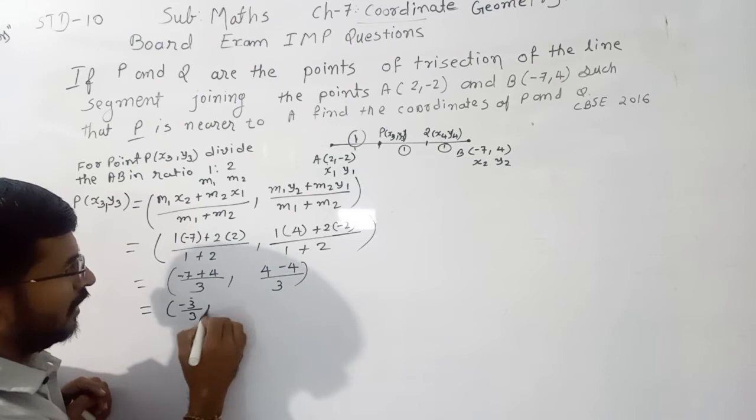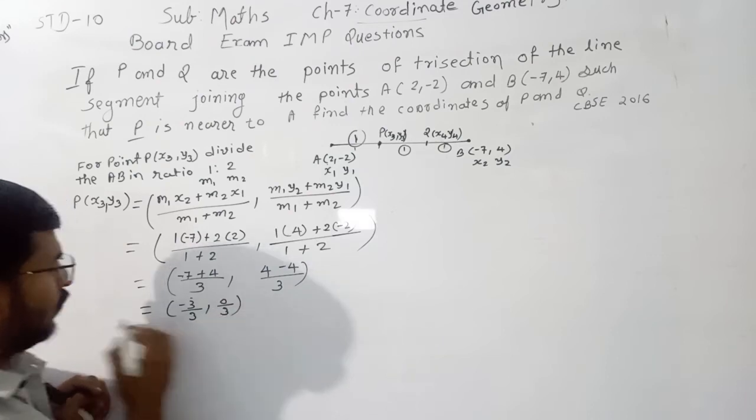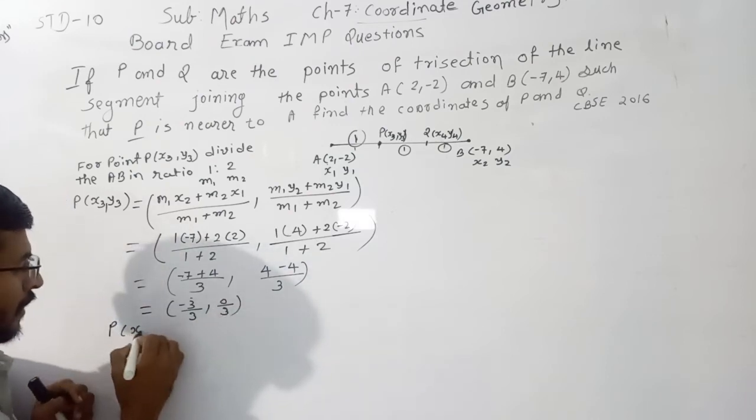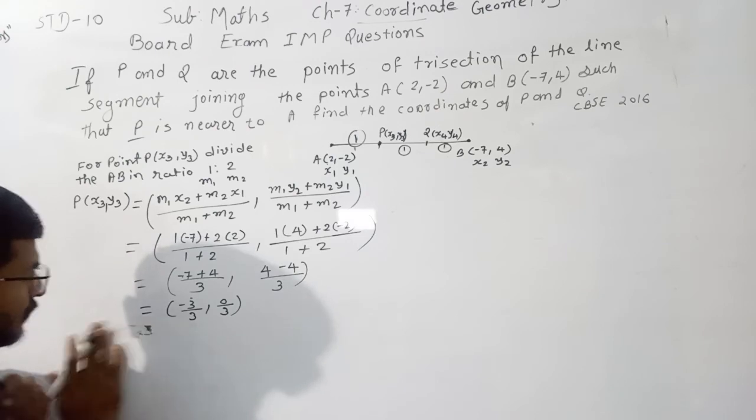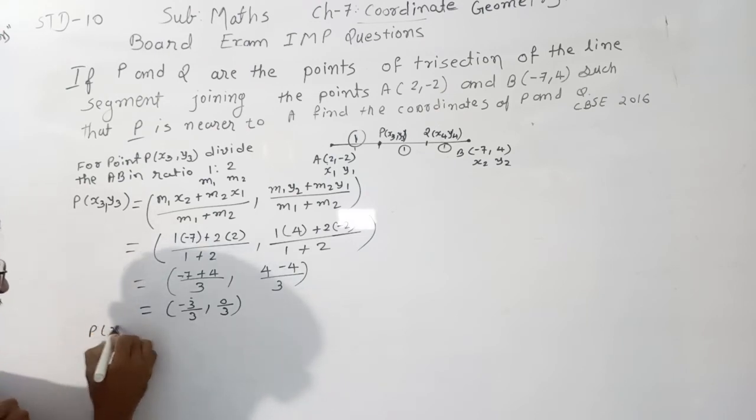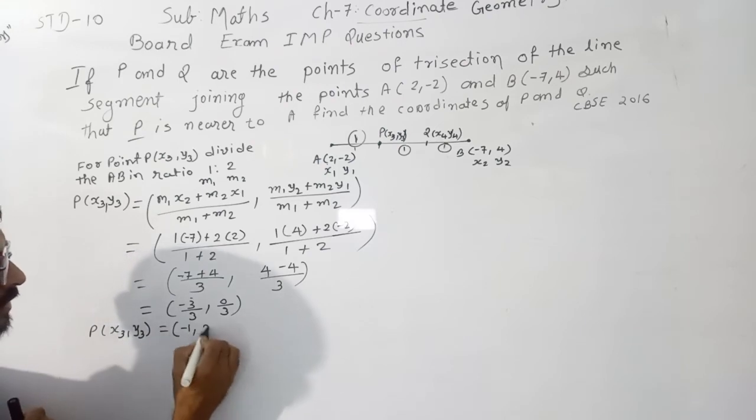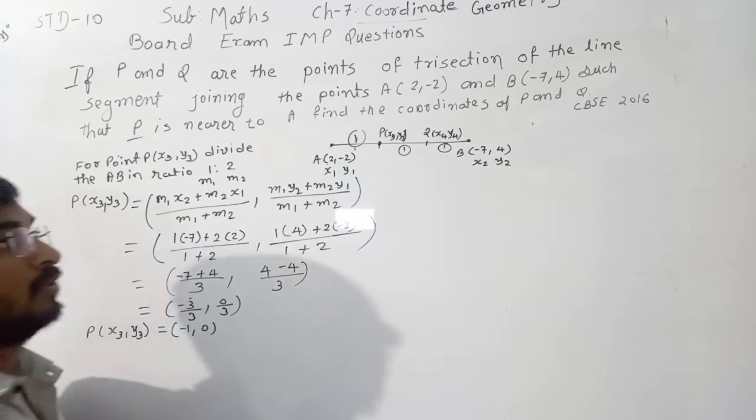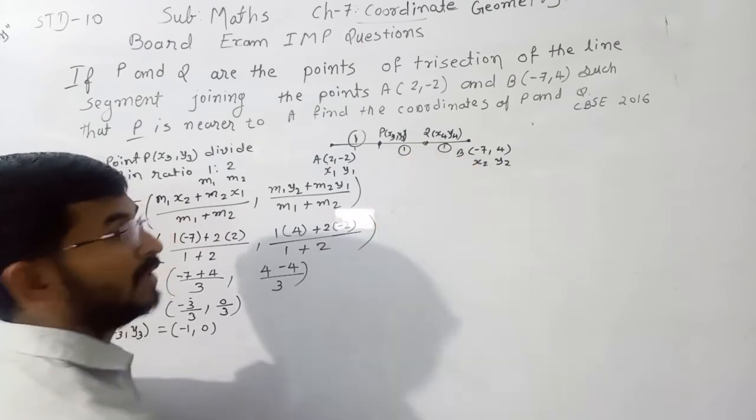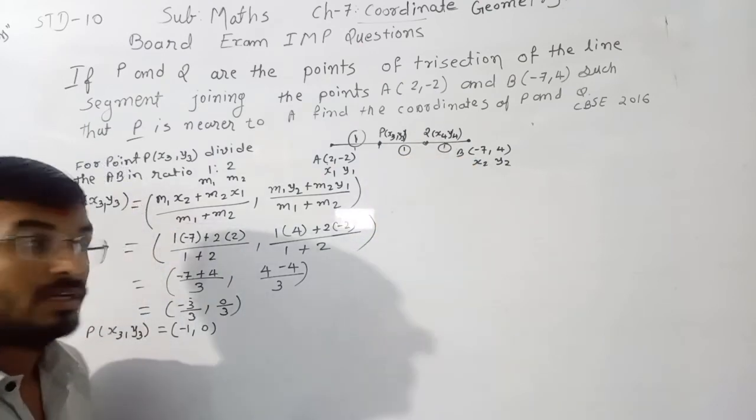Now vertices of P, X3Y3, is equal to -1 and 0. Now Q is the midpoint of P and B.